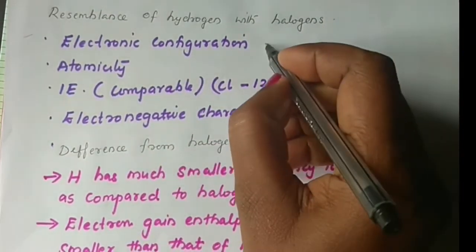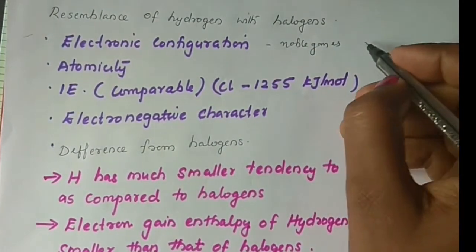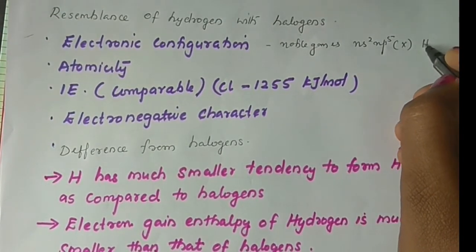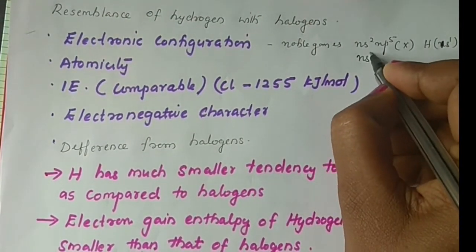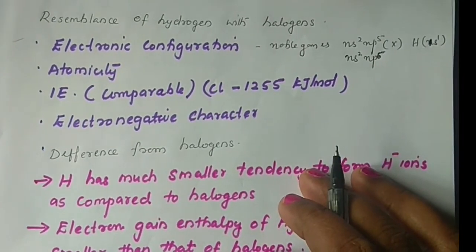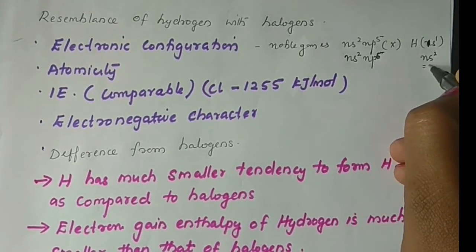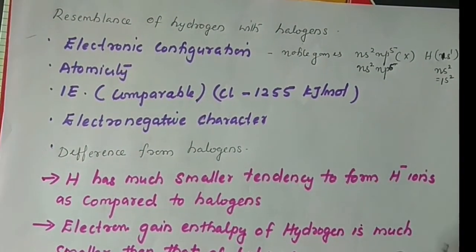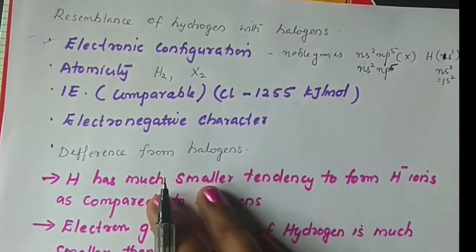The resemblance of hydrogen with halogens: first point is electronic configuration — halogens have ns2 np5 and hydrogen has 1s1; both need one electron to achieve noble gas configuration (ns2 np6 for halogens and 1s2 for hydrogen). Second point is atomicity — hydrogen exists as a diatomic molecule H2, and halogens also exist as diatomic molecules.